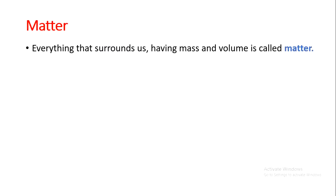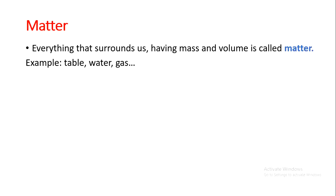So first, let's define matter. Everything that surrounds us having mass and volume is called matter. Everything around us — whether solid, liquid, or gas — that has mass and volume is called matter. For example, a table has mass and takes up volume, so it is matter. Water is matter because it takes volume and has mass, and gas also is matter. So everything that surrounds us is called matter.